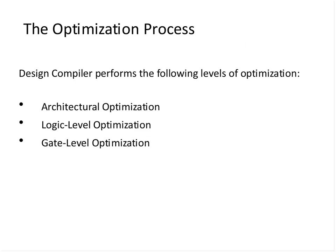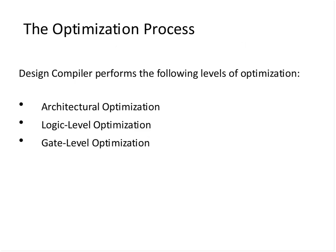So let us focus on the compile in this section. The optimization process DC performs is divided - it is at three levels. DC will do optimization at three levels starting right from the RTL. The first level is called architecture optimization, second is called logic level optimization, third is called gate level optimization. Let us look at each of them in a bit of detail.